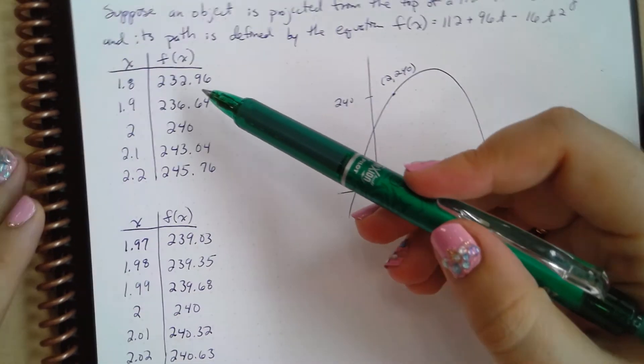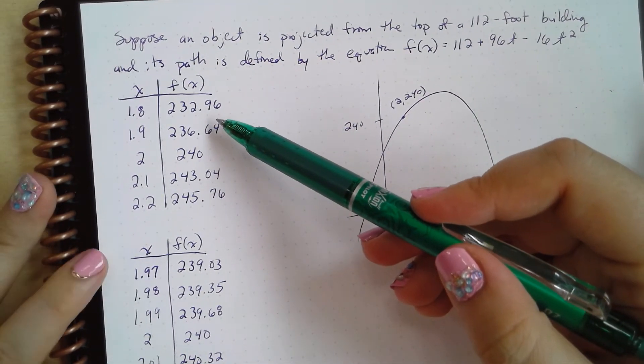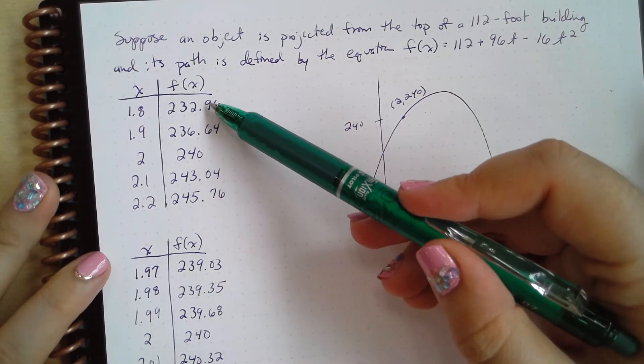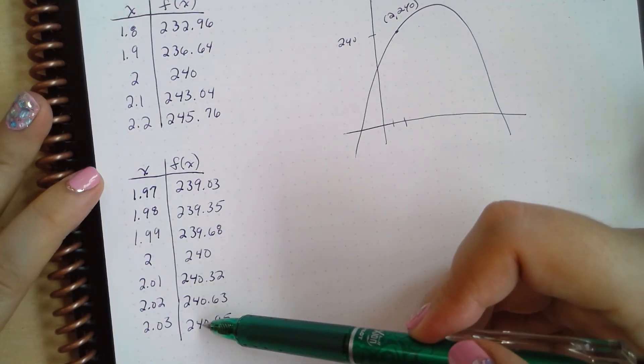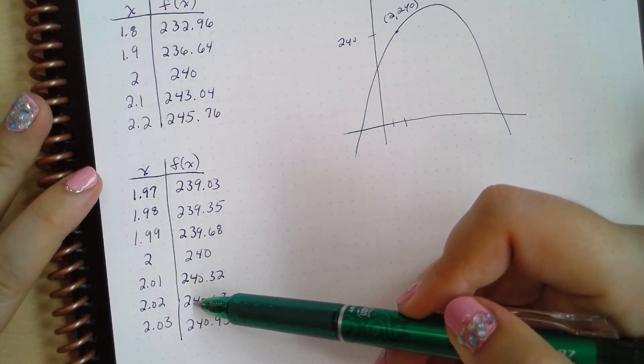And you can see that this becomes even more accurate, right? So up here, if I wanted to find the average rate of change at 2, maybe I could use like 2.2 to 1.8 or 2.1 to 1.9. But now I can use numbers that are even more precise, right?